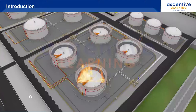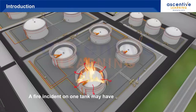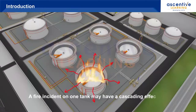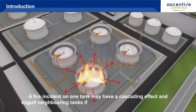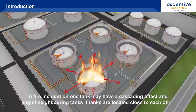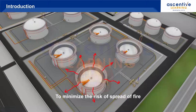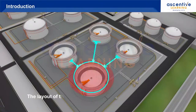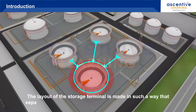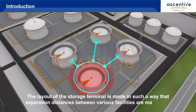A fire incident on one tank may have a cascading effect and engulf neighboring tanks if the tanks are located close to each other. To minimize the risk of spread of fire, the layout of the storage terminal is made in such a way that separation distances between various facilities are maintained.